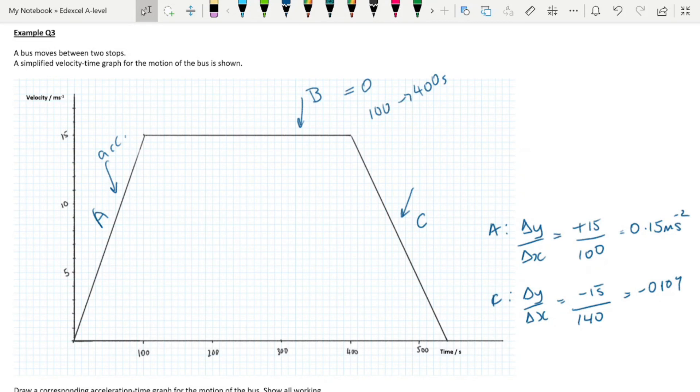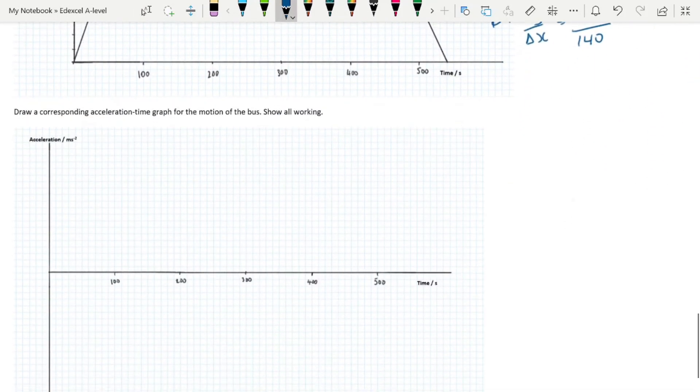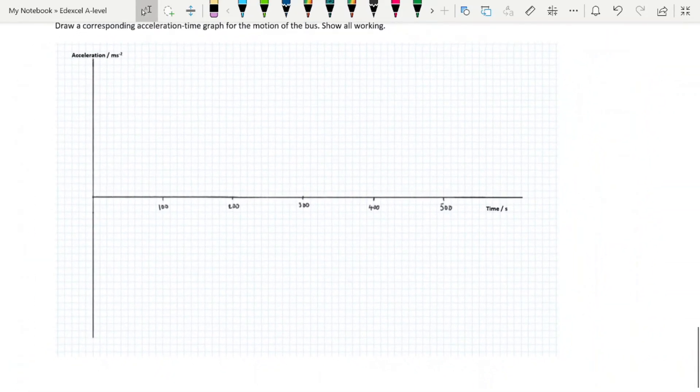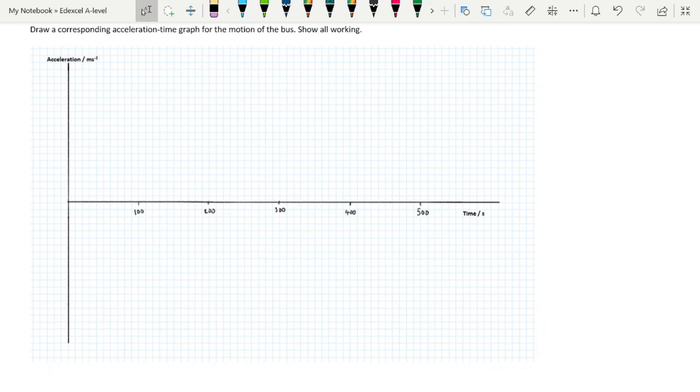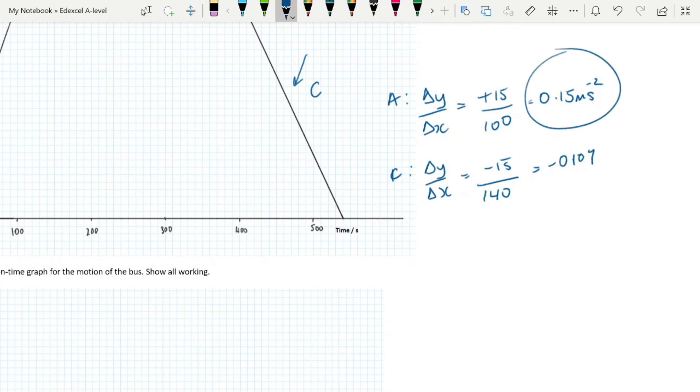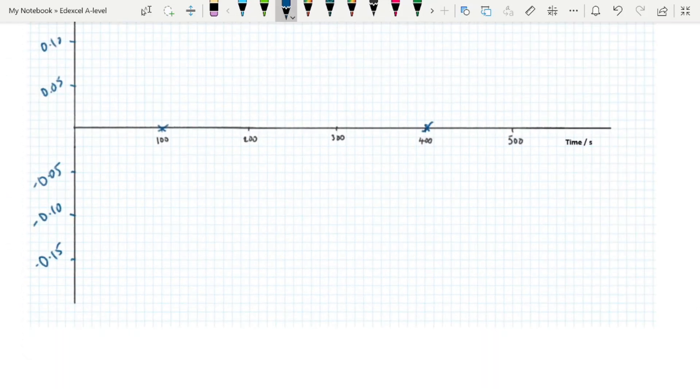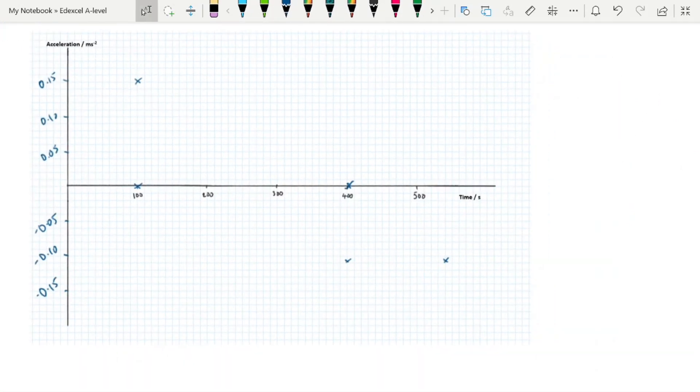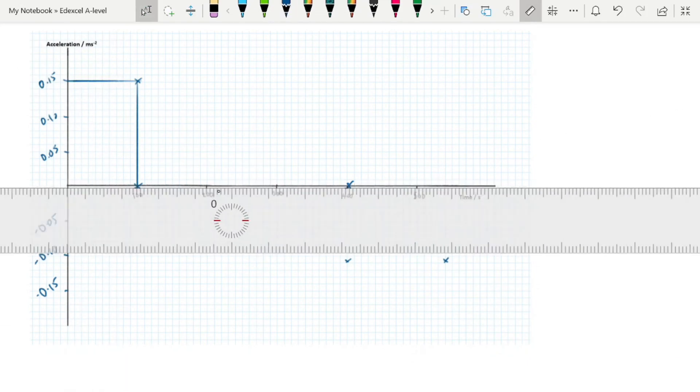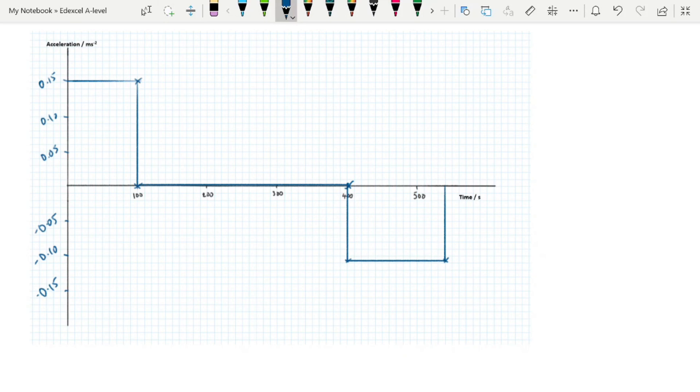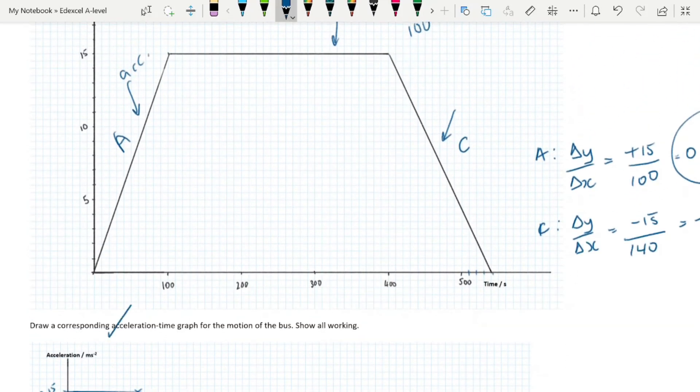We need to transfer this data onto our acceleration-time graph. We start off at zero, and for part A, we have a constant acceleration up to 100 seconds of 0.15. We don't have any scale in this acceleration-time graph, so that's the first thing you need to do. We need to go up to a maximum of 0.15. Once you've done your scale, then you're just plotting your points. And once you've plotted your points, you simply put in your lines. There you have it. Acceleration-time graph for the motion shown, with all the working shown.